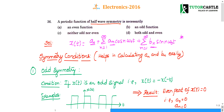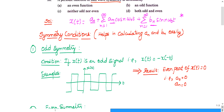These Fourier series constants are difficult to find — they have integration formulas. Finding a0 takes about 5 minutes, finding an takes about 15 minutes, and finding bn takes another 15 minutes, so it takes nearly 35 minutes total. It is a tedious process. For that purpose, we have introduced something known as symmetric conditions.